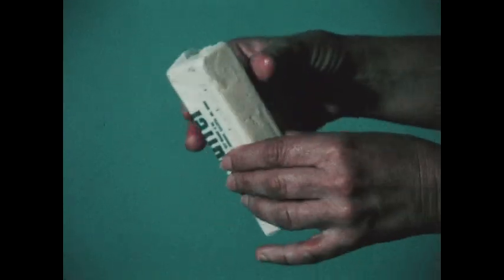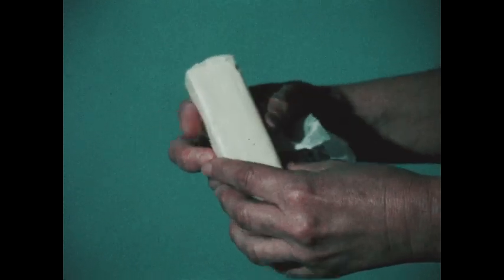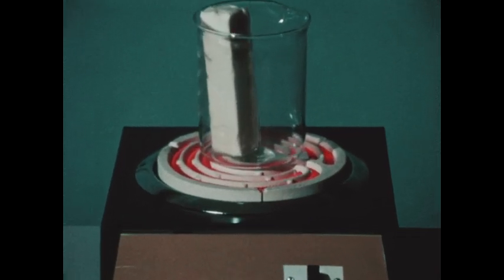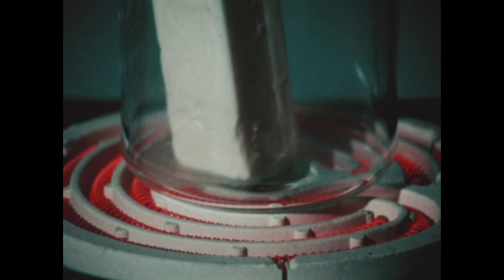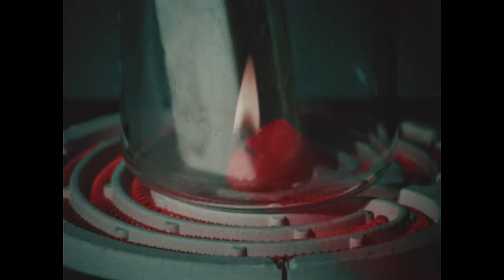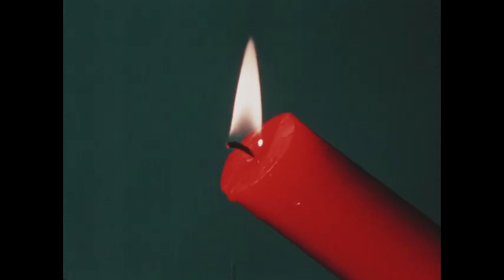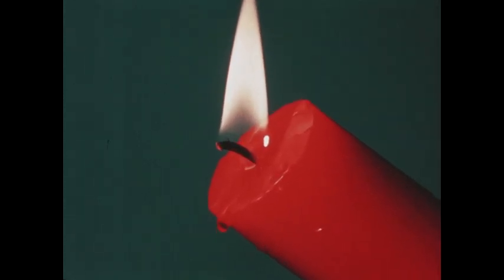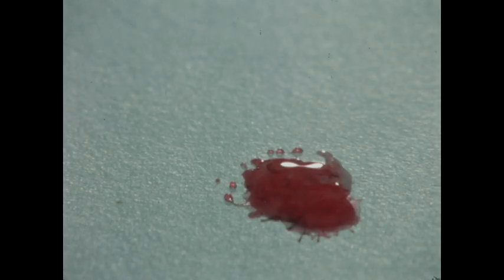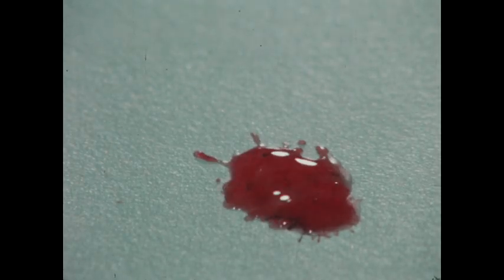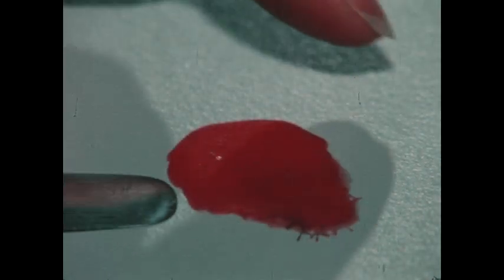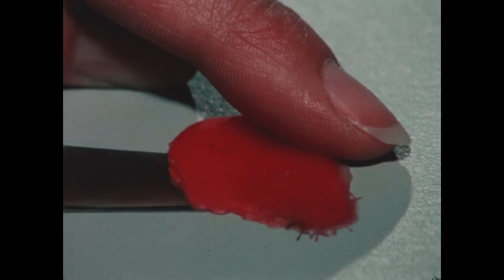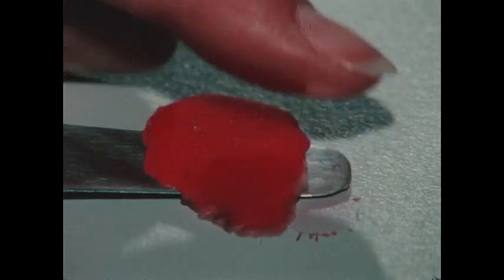Can you think of other things that melt when they're heated? Making things melt. This is a way heat changes things. What will happen to the melted wax when it cools? It becomes hard once again.